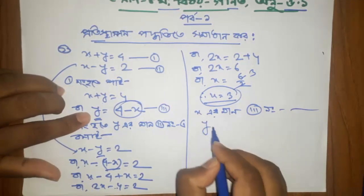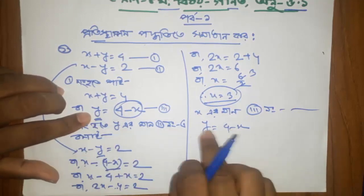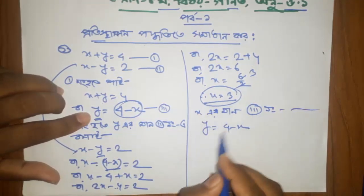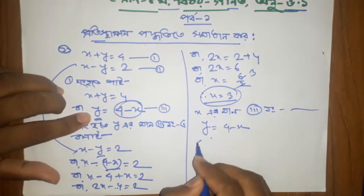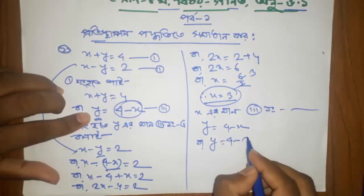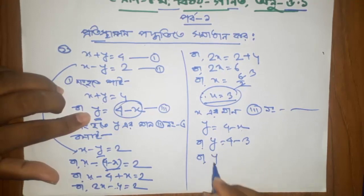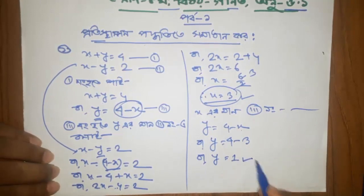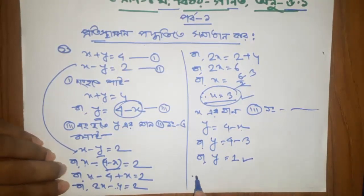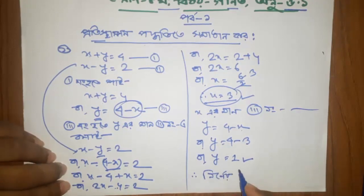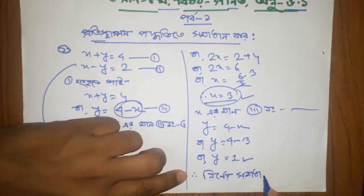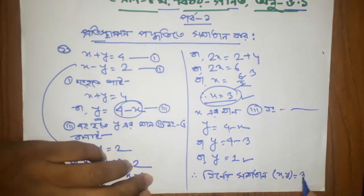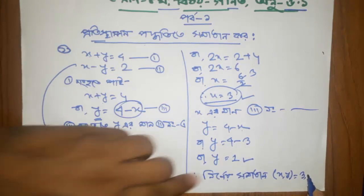This is my second number is 3. y minus 4 minus x. I will give you 3. y minus 4 minus x minus 3 is 3. The answer is 3, y is equal to 1. Then the answer is 3, y is equal to 1. So the answer is 3 and y is equal to 1.